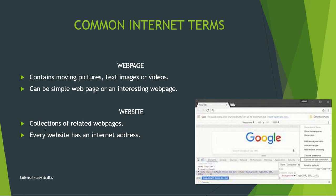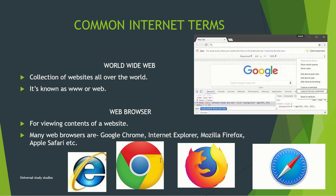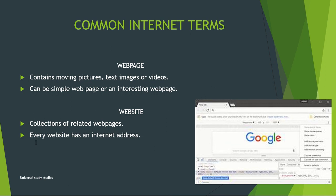A website is a collection of related web pages. Every website has an internet address — for example, www.something.com. Think of a website like a book: it has lots of web pages inside it. The internet address is unique for each specific website.